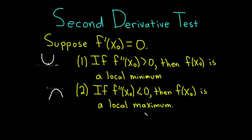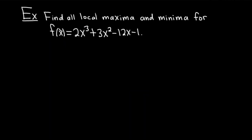Let's go ahead and do some examples. Find all local maxima and minima for f of x equals 2x cubed plus 3x squared minus 12x minus 1. Let's work through the solution. We'll start by using the second derivative test — we'll take the derivative and set it equal to 0.